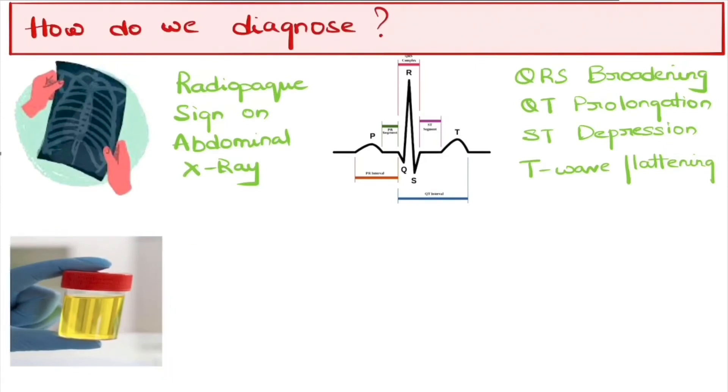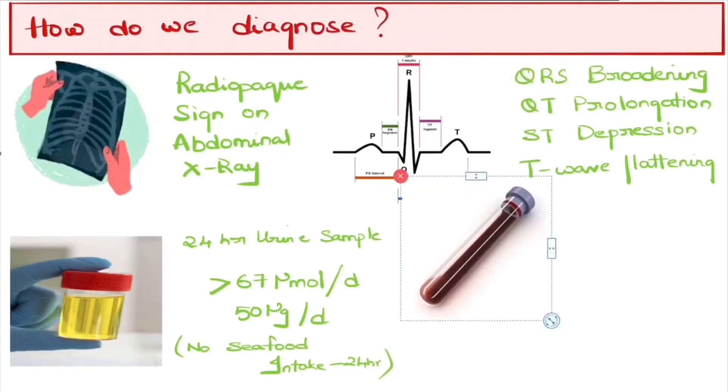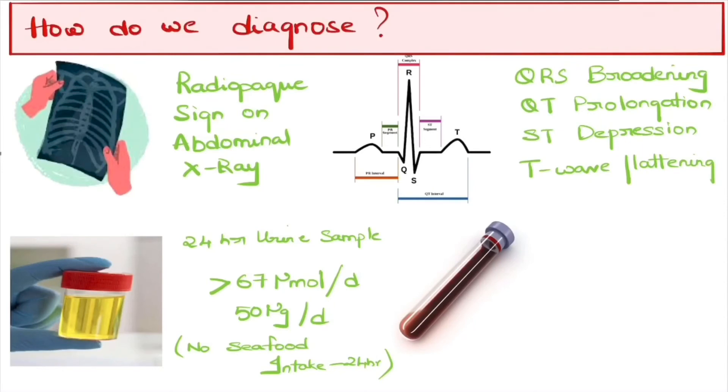Further, 24-hour urine sample is evaluated, and if found like greater than 67 micromole per deciliter or 50 microgram per deciliter, it means that you are affected with arsenic poisoning. And here we have a note, we should not have seafood before the test for at least 24 hours. And lastly, serum arsenic concentration greater than 0.9 micromole per liter or 7 microgram per deciliter indicates arsenic poisoning.